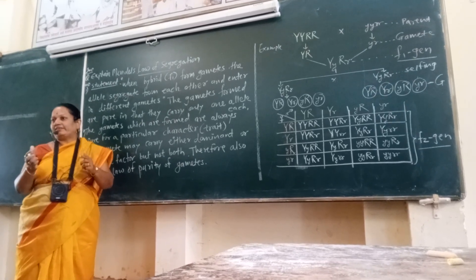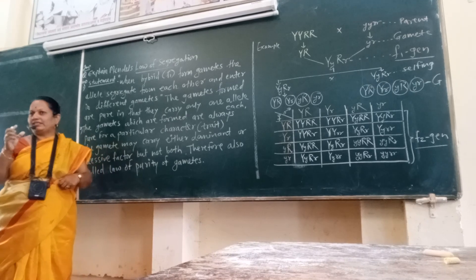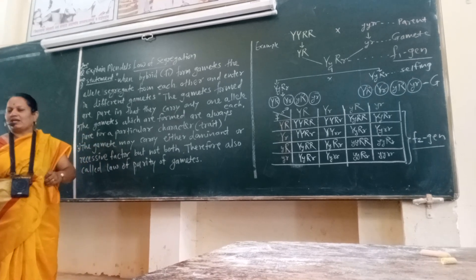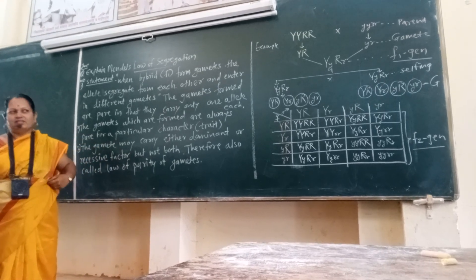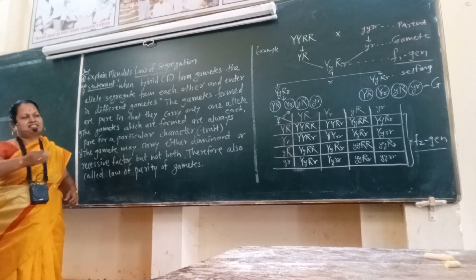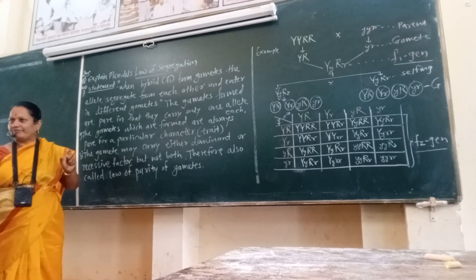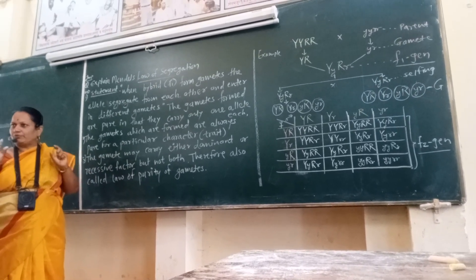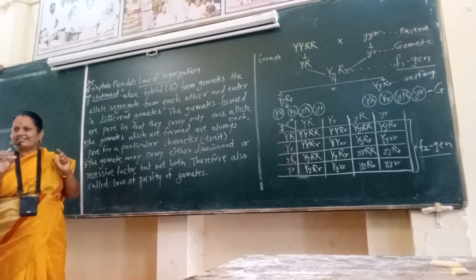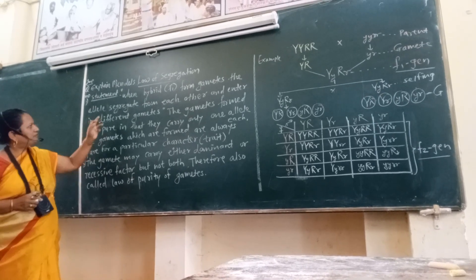Segregation — to segregate. When gametes are formed, the alleles get segregated from each other. Therefore, this law is called the law of segregation.